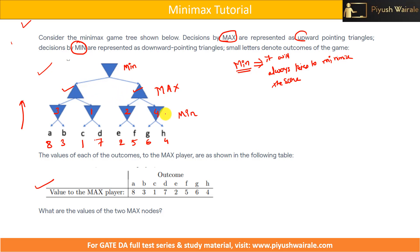The min player will always try to minimize the score. Out of the two possible outcomes, C will be selected for the min player. So the resulting values are: 3 here, 1 here, 2 here, and 4 here. The min player selects the minimum outcome from the given outcomes at each node.